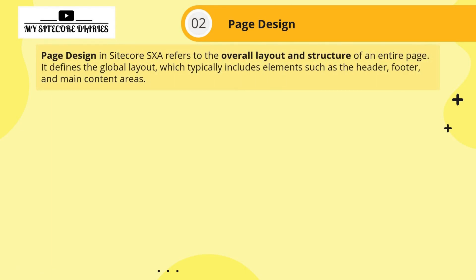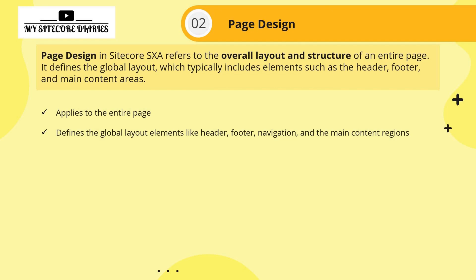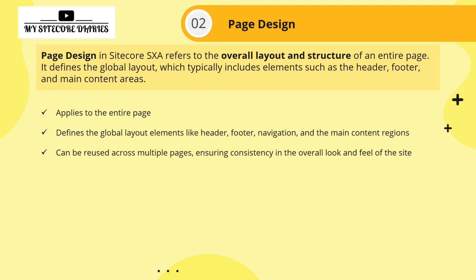Page design in Sitecore SXA refers to the overall layout and structure of an entire page. It defines the global layout, which typically includes elements such as header, footer, and main content areas. Characteristics of page design: it applies to the entire page, defines global layout elements like header, footer, navigation, and main content regions, and can be reused across multiple pages ensuring consistency in the overall look and feel of the site.